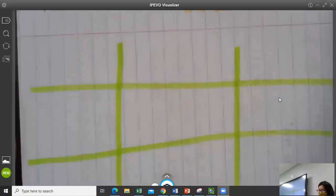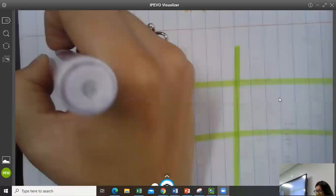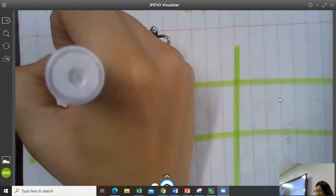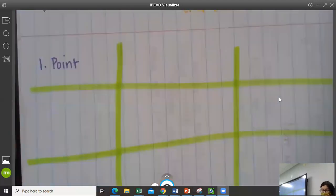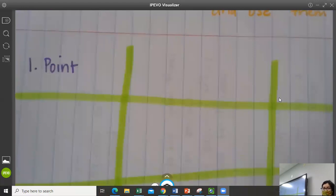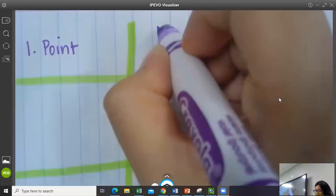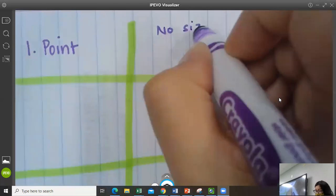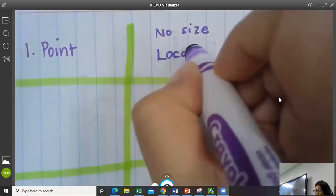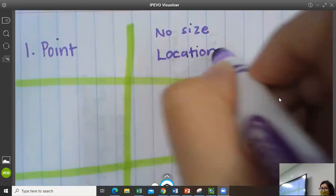So word number one is point. So a point is going to look like a dot, kind of like a circle filled in. Now a point has no size. It's just location. It just tells you where something is.